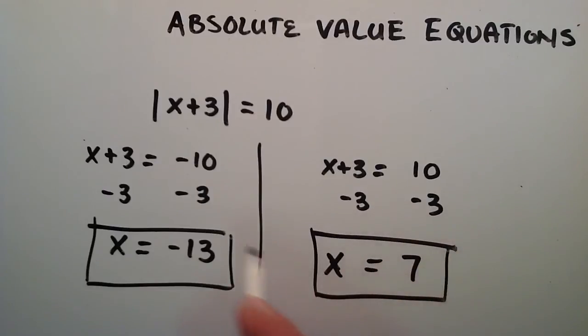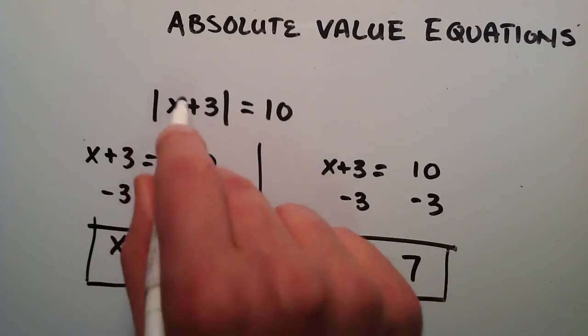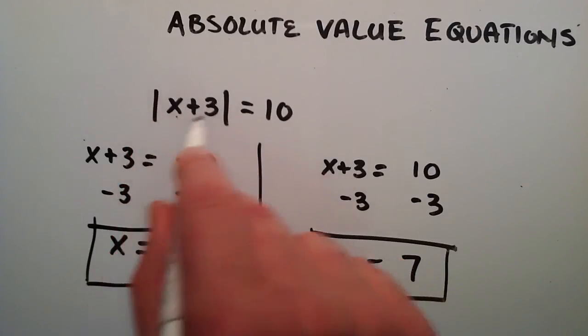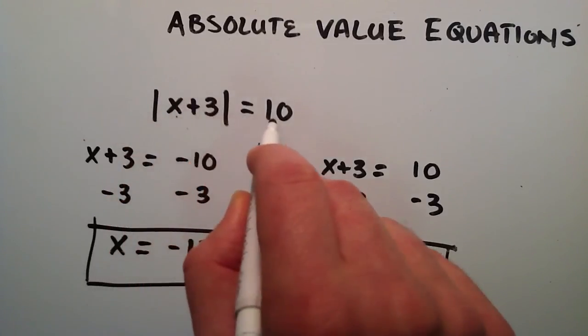If we want to look at this, this makes sense. Now we can trade the negative 13 for the x up here. So negative 13 plugged into our x value, negative 13 plus three is a negative 10, and negative 10 inside absolute value bars equals positive 10.